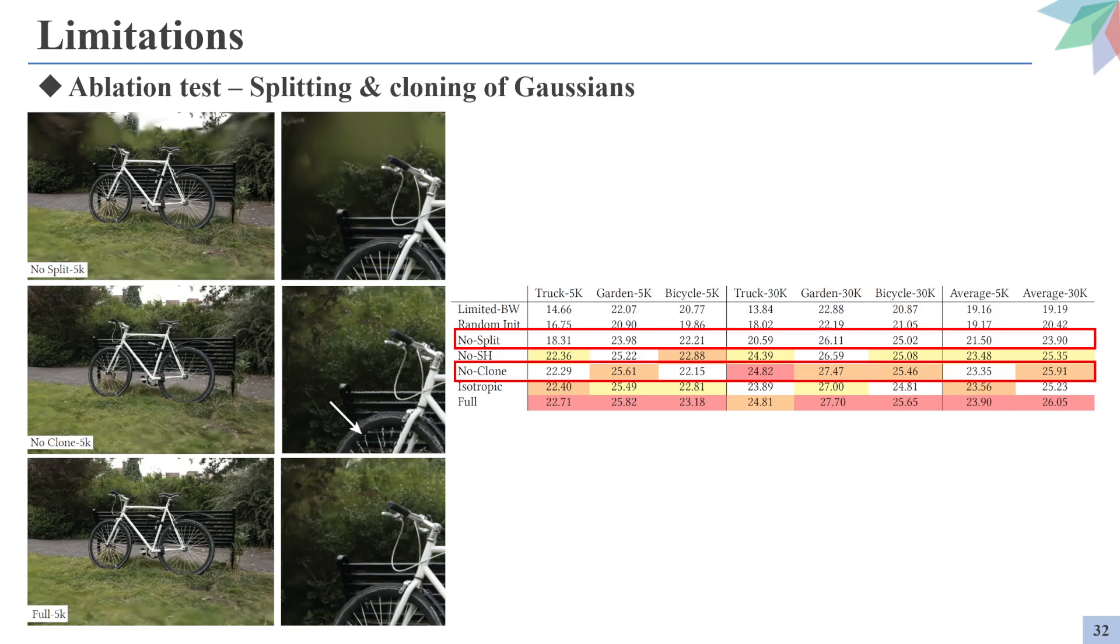This experiment shows how the densification process affects the synthesized scene. Removing the split of Gaussians results in blurred scenes, whereas removing the clone of Gaussians results in missing features such as the wires of the tire.